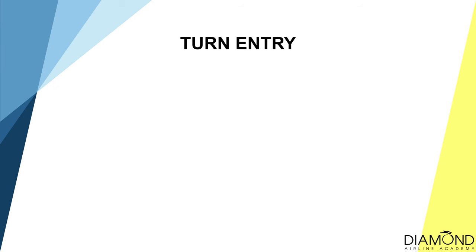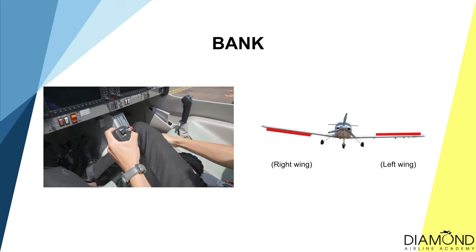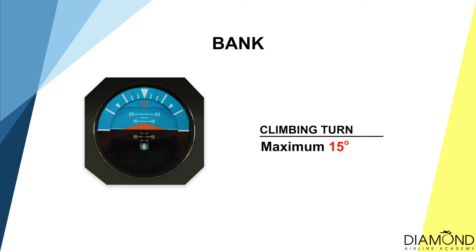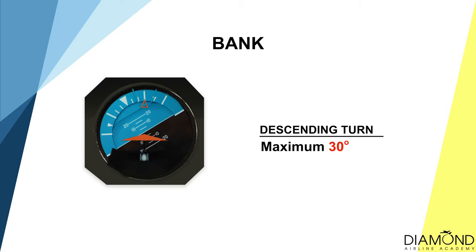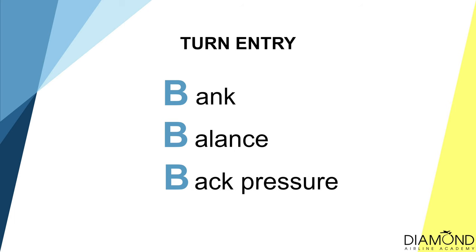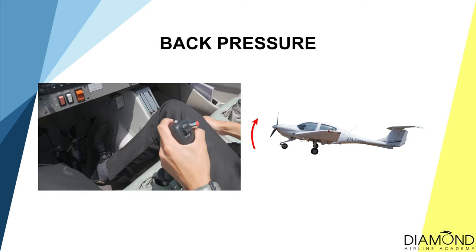After the entry cycle for climbing or descending, we move to the entry cycle for turning: B, B, B — Bank, Balance, Back Pressure. Bank using aileron to turn the aircraft. During a climbing turn, the angle of bank should not exceed 15 degrees, whereas in a descending turn it can go up to 30 degrees. Balance using rudder to balance the aircraft. Back Pressure — use the elevator to maintain the attitude of the aircraft. After establishing in a climbing or descending turn, we move to the next work cycle: the maintenance work cycle.